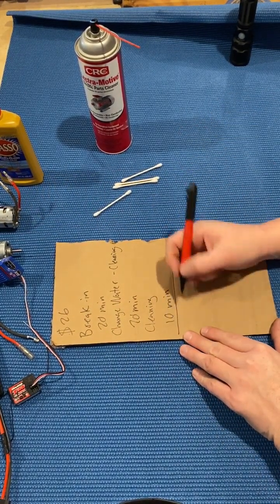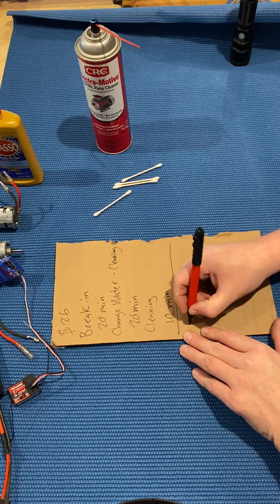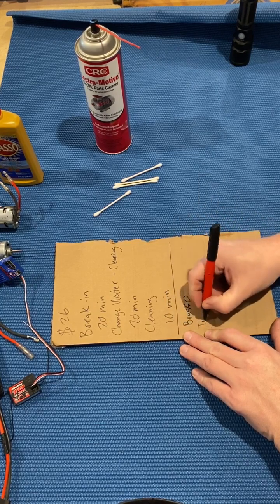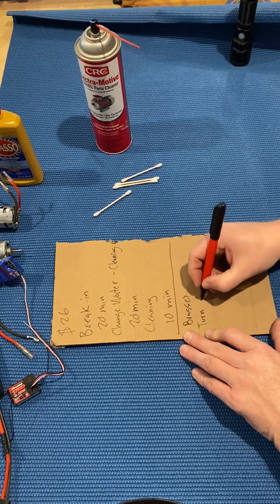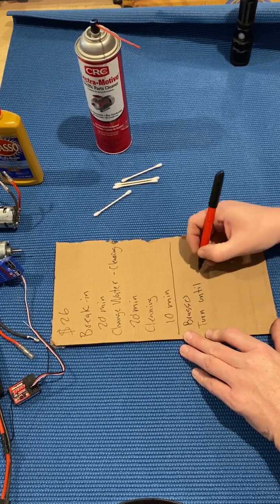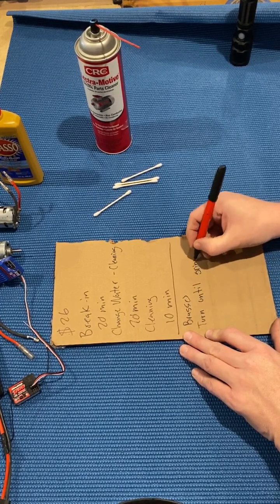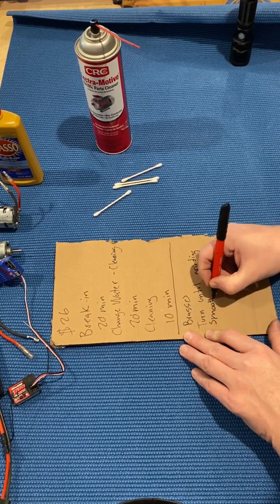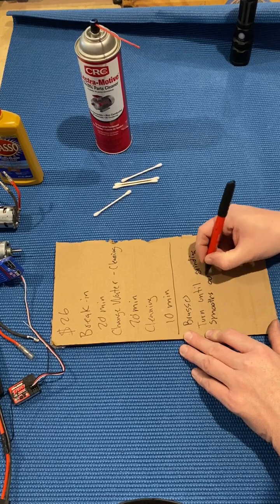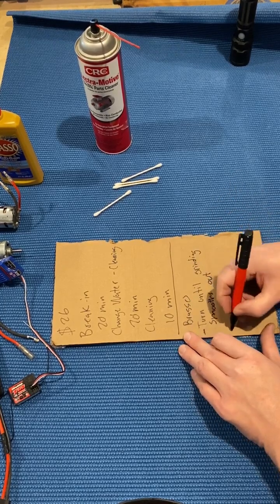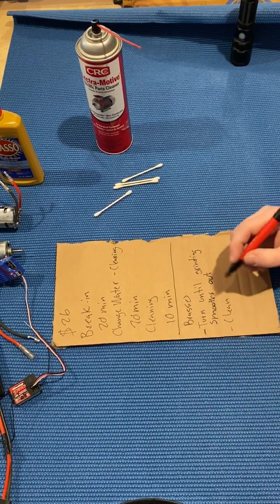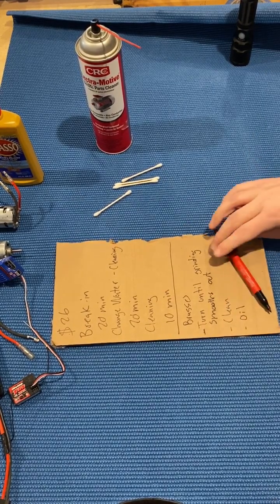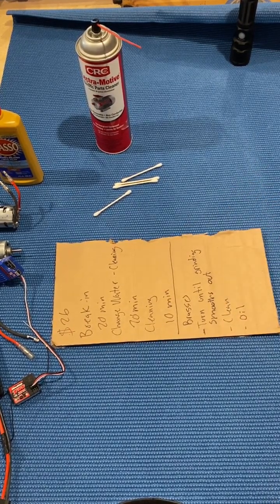So let's write that down. So you remove your motor from your car. You're going to do Brasso. Turn it until it smooths. The grinding smooths out. Turn until grinding smooths. Then you're going to clean the motor. And then you're going to put it back in your car after you oil it. That's it. That's it, guys.